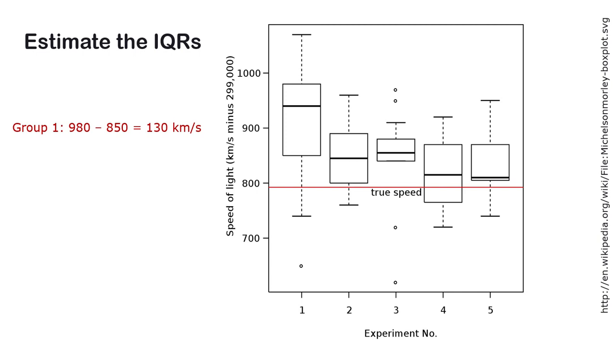Group number one, it looks like the variability, as measured by IQR, is 130 kilometers per second. 980 minus 850 was my guess. I'll let you figure out group two. I'll tell you group three, though. I thought it was about 40.